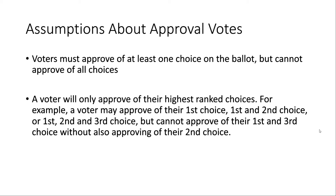Now we'll get to some assumptions about approval votes. Voters must approve of at least one choice on the ballot but cannot approve of all choices. The reason is that if you approve of one or more choices but not all of them, you're giving those choices an edge over others. If you approve of everybody, it's the same as not voting for anybody — you're just leveling the playing field and not giving anybody an advantage over other candidates. So you have to vote in a way that gives one or more candidates an advantage.